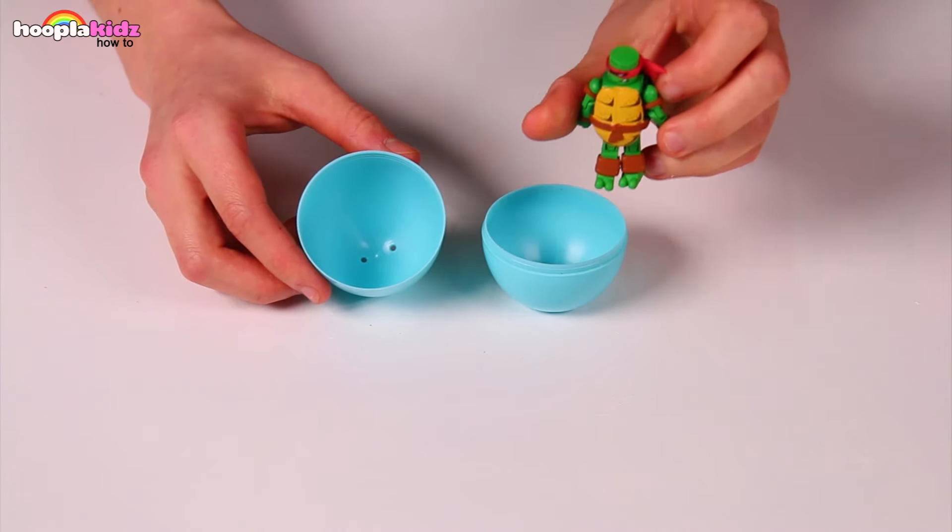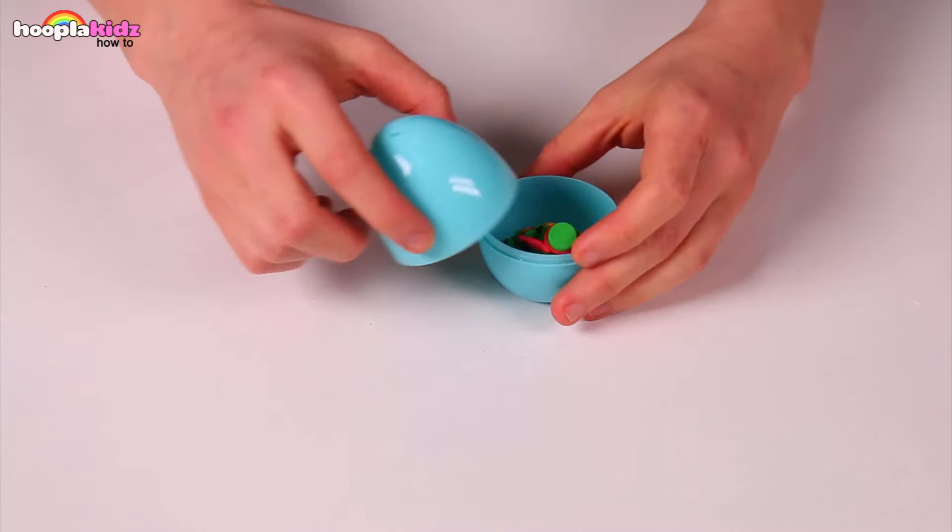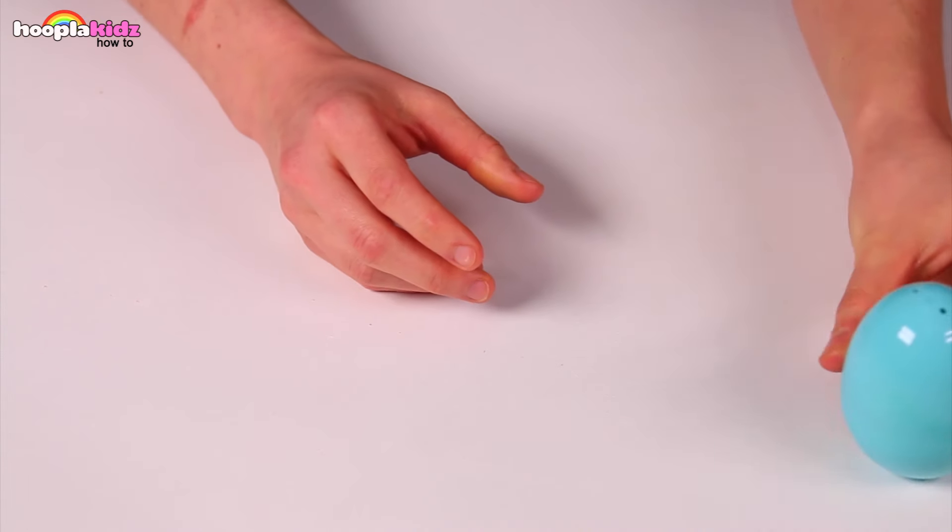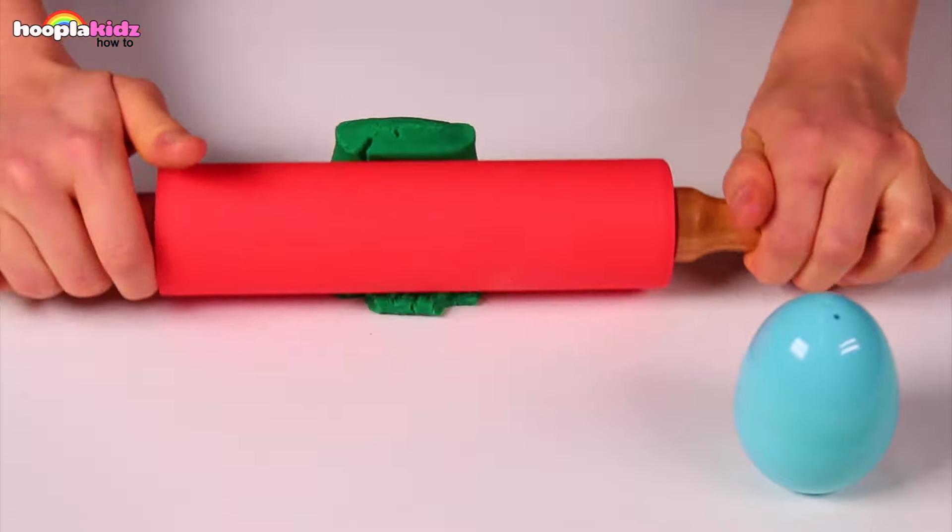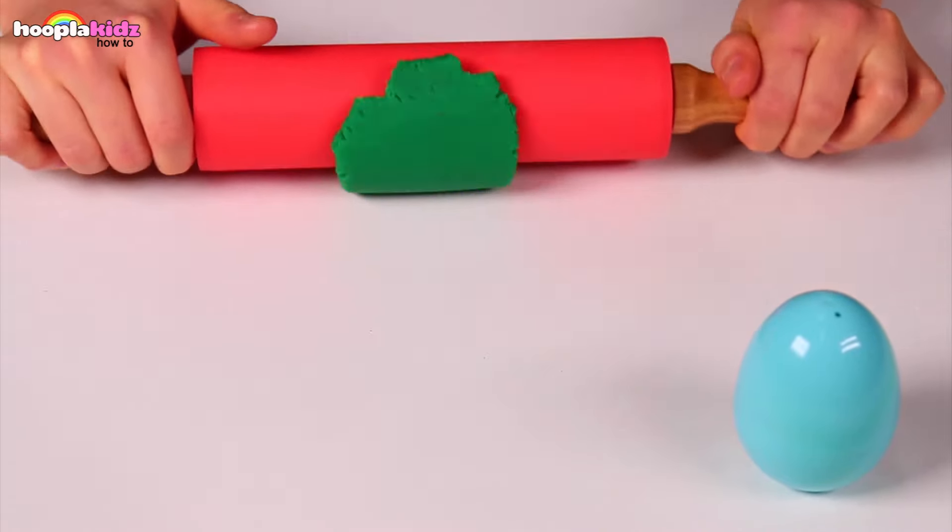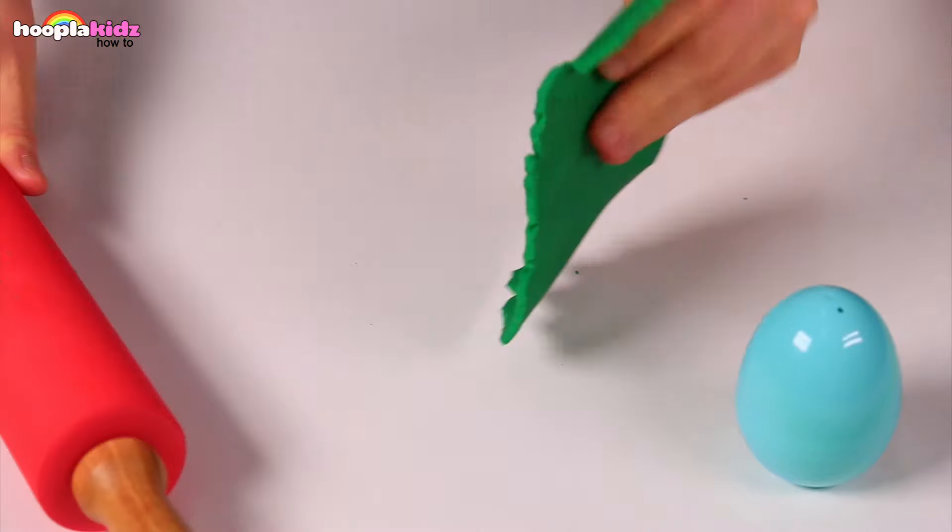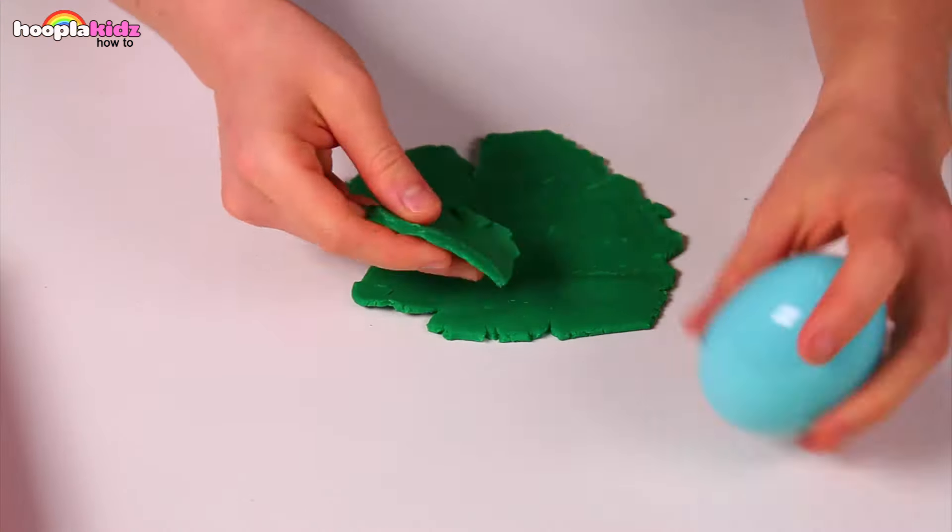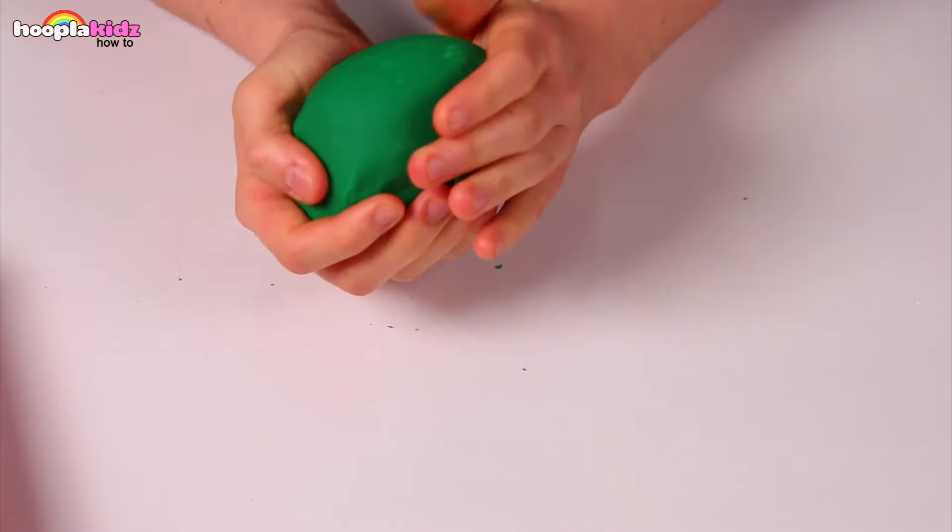First, take an egg and fill the egg with your Ninja Turtle. Take some green Play-Doh and roll it out with the rolling pin. Make sure it's big enough to cover the egg. Wrap the Play-Doh around the egg and make sure there's no gaps.